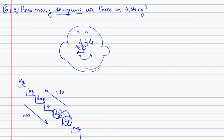And here we have to put one zero. Then the number is 0.434 and we have to write the units decigrams, the symbol of the unit. Okay.